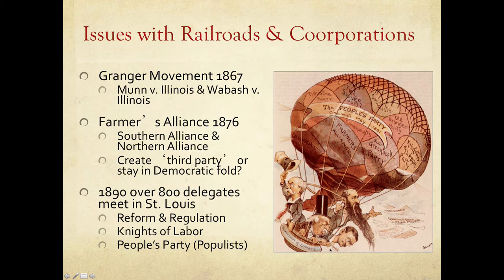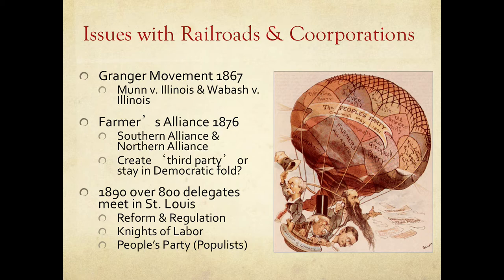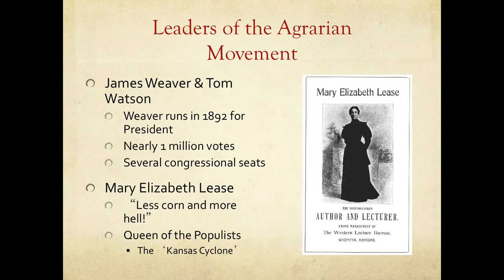Here's a political cartoon called the 'Platform of Lunacy,' depicting cartoon characters of various Populist Movement leaders riding a patchwork balloon. The patches represent the Farmers Alliance, the Old Greenback Party, Knights of Labor, anarchists, communists, Women's Suffrage, Old Granger, socialist, free silver, and the Prohibition Party. This clearly is not a pro-People's Party cartoon — especially with that title. But this movement will soon scare both Democrats and Republicans, becoming a major force especially in the West.